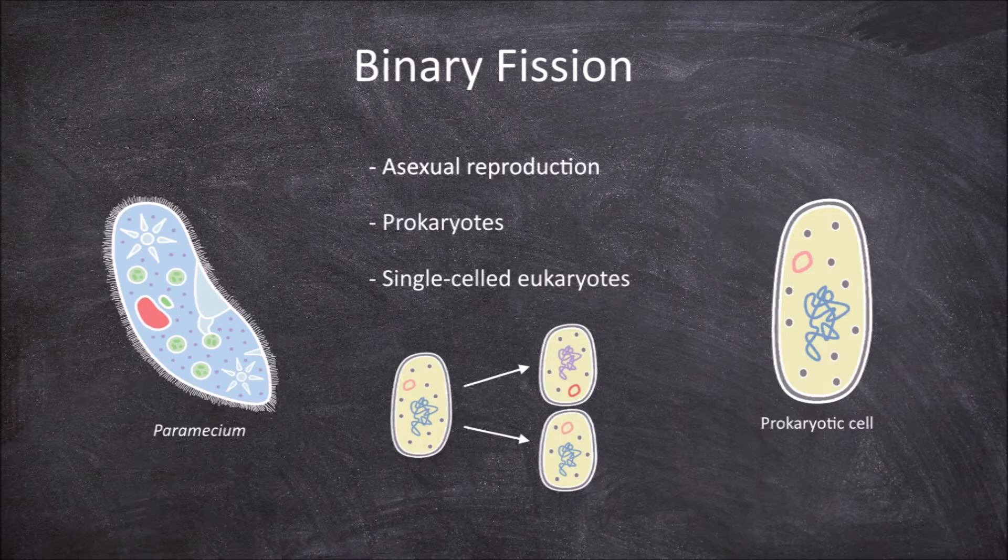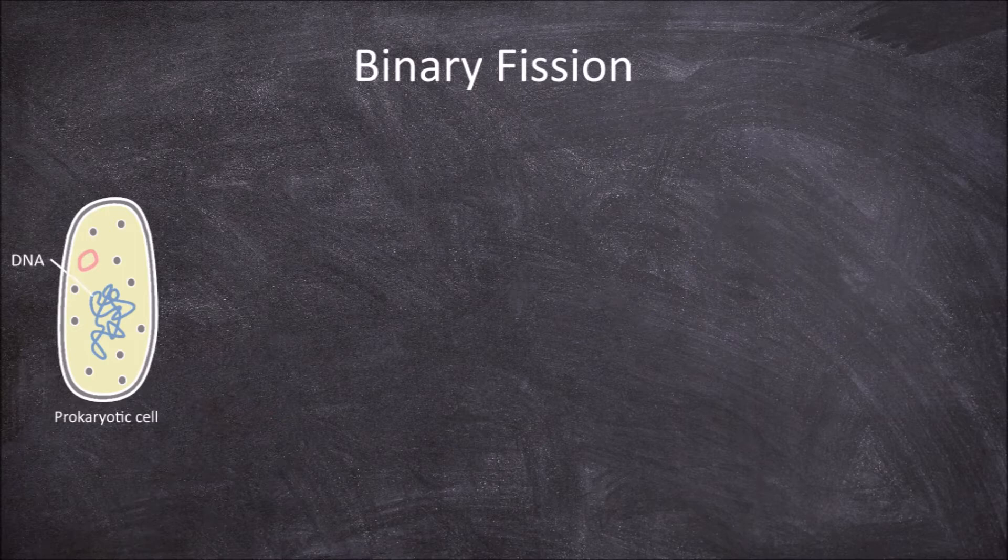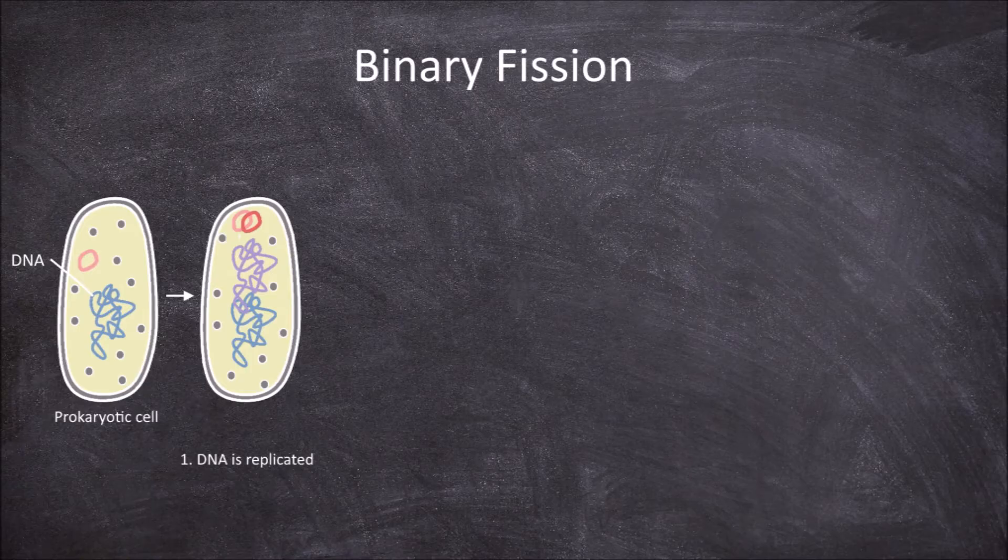There are several steps involved in the process of binary fission. Prokaryotes possess a single circular DNA strand. The first step involves this DNA strand being replicated in response to a replication signal.